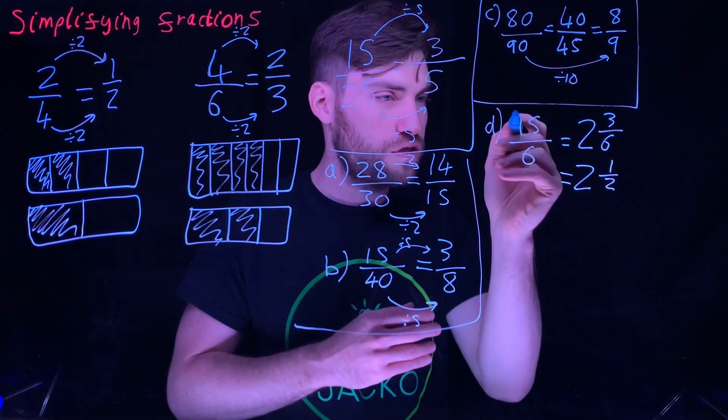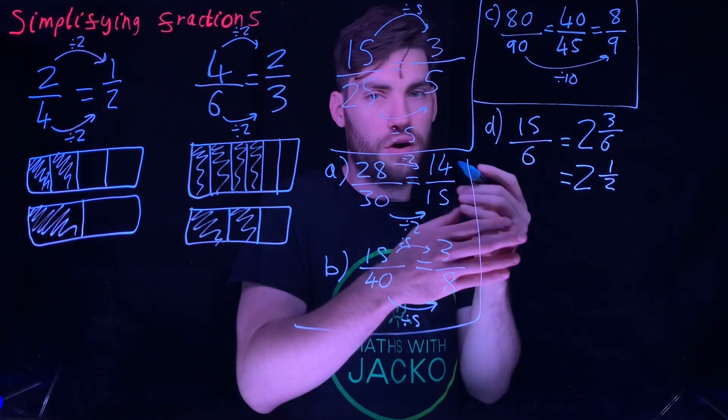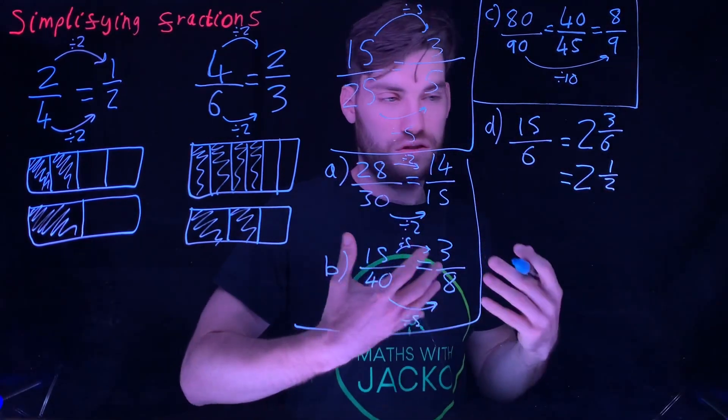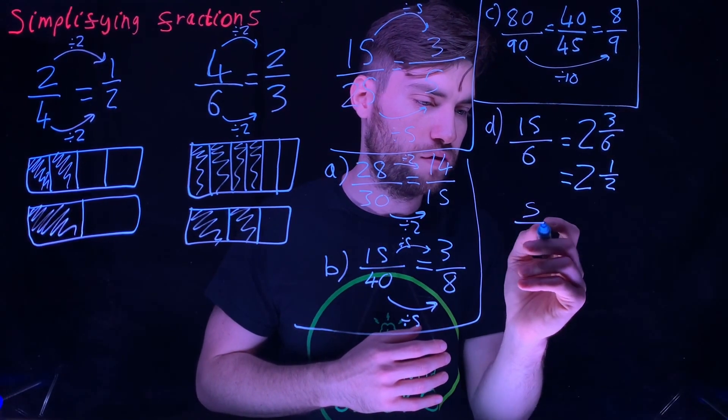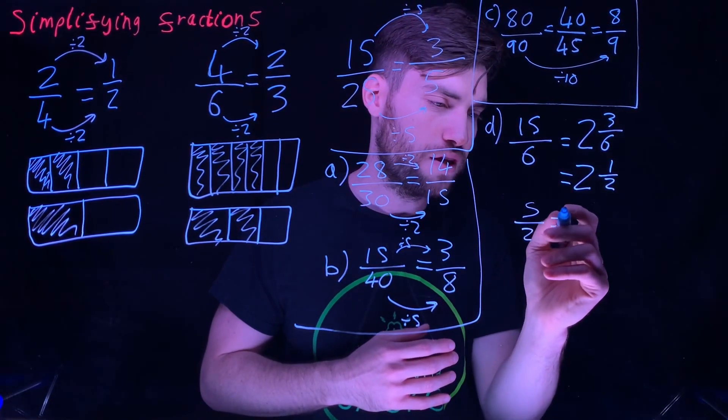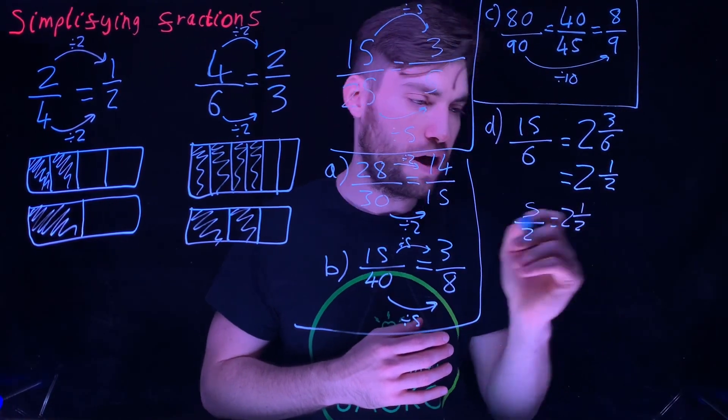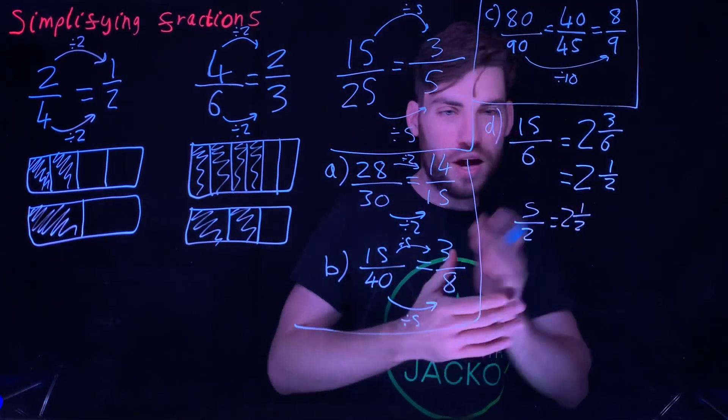Alternatively, you can simplify it first and then go to this. What number goes into 15 and 6? That's 3. How many 3s are in 15? That is 5. How many 3s are in 6? It's 2. And then you can simplify that to 2 and a half. There's another way to do it.